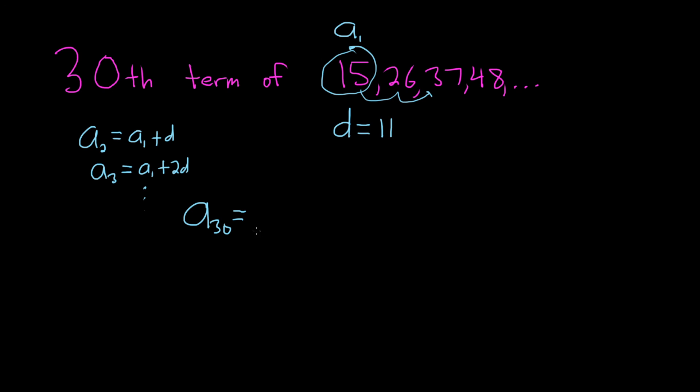So to find the 30th term, we take the first term, and we have to add d 29 times, so 29d. Notice, if you do 30 minus 1 equals 29, that will always work, every single time.